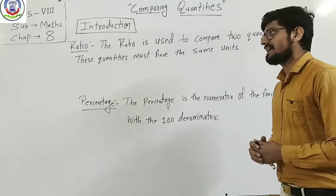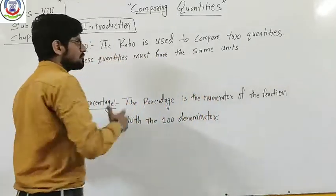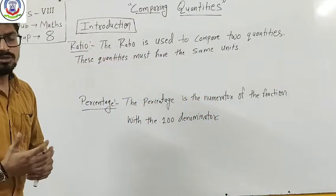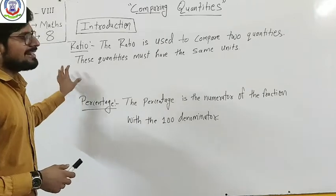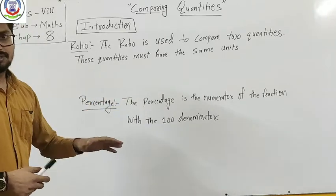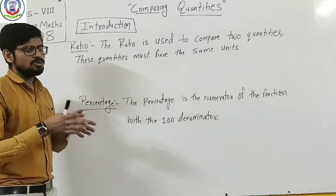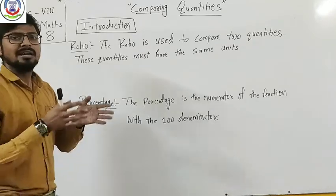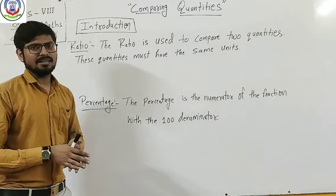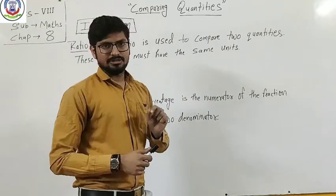First, you have discussed what is ratio. Ratio is used for comparing quantities, and these quantities must have the same units. You must compare the same units—liter to liter, kilometer to kilometer—because quantities must have same units.